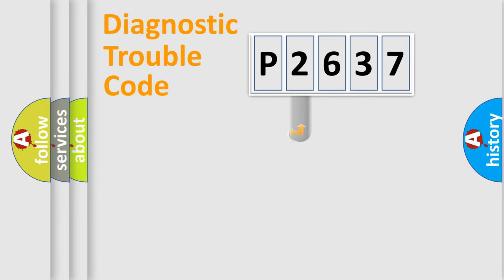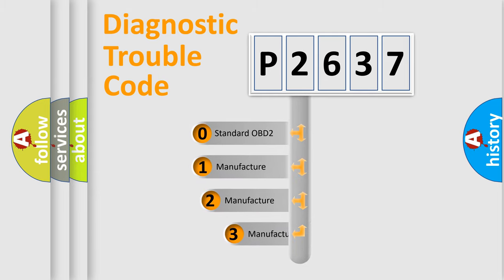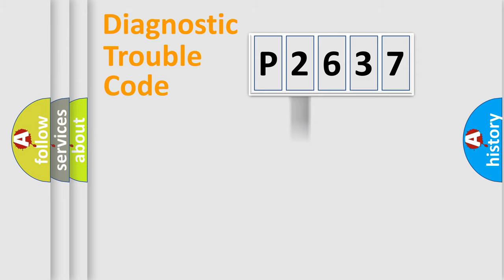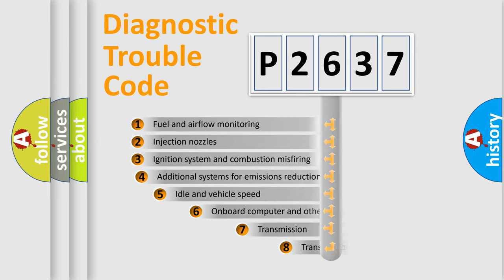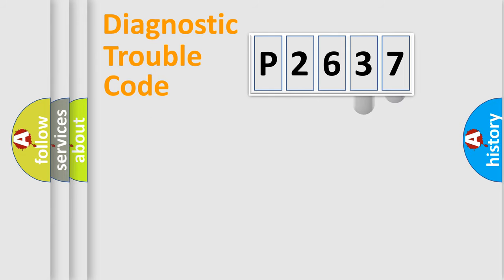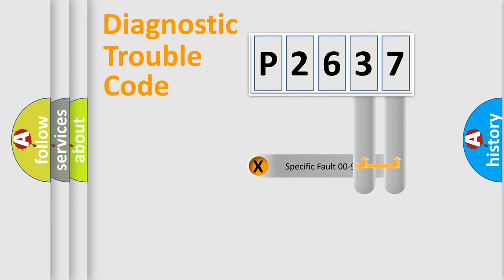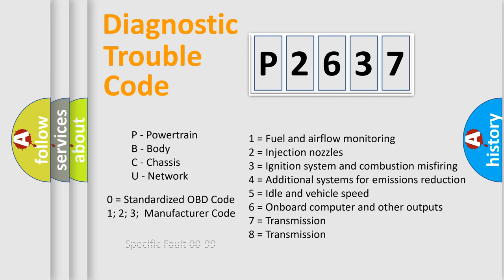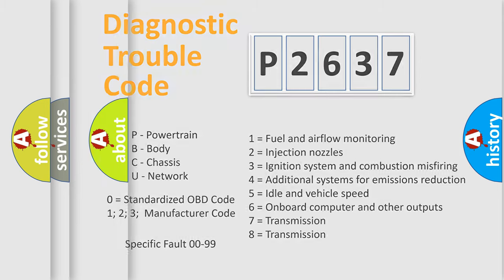This distribution is defined in the first character code. If the second character is expressed as zero, it is a standardized error. In the case of numbers 1, 2, 3, it is a more specific expression of the car-specific error. The third character specifies a subset of errors. The distribution shown is valid only for the standardized DTC code. Only the last two characters define the specific fault of the group. Let's not forget that such a division is valid only if the second character code is expressed by the number zero.